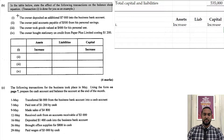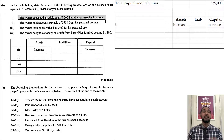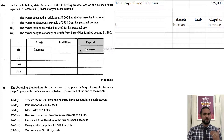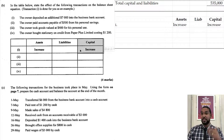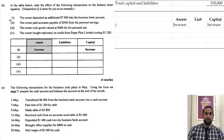Transaction one: the owner deposited an additional $7,000 into the business bank account. Once the owner is contributing any resource to the business, capital is increasing. Whether it was money in the bank account, a vehicle, or inventory — all of those things are assets — and that particular asset is increasing. So we have increase for both assets and capital.